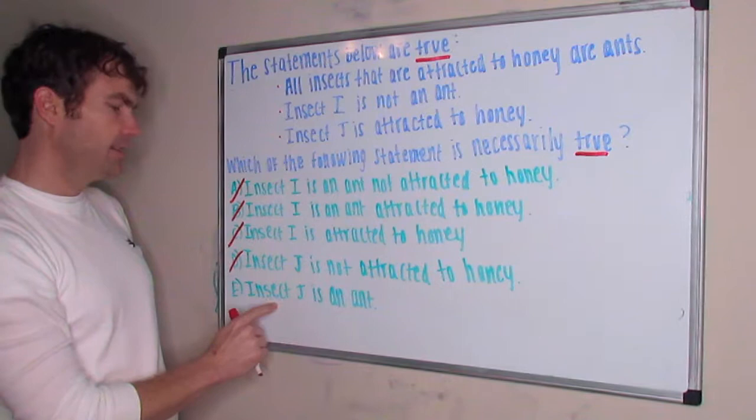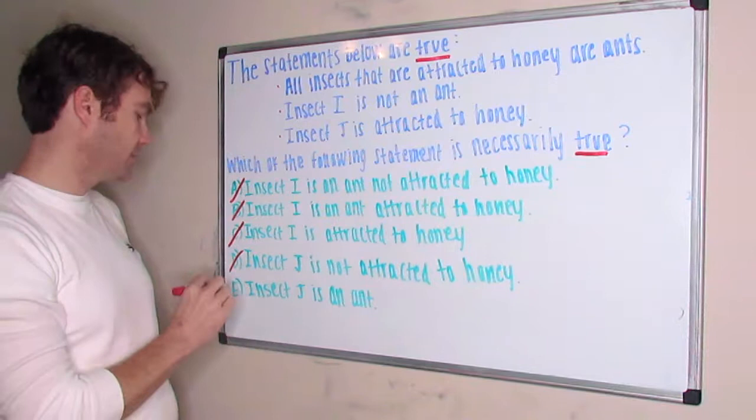And then insect J is an ant—that's the one that I had in my mind that was probably the right answer to begin with, and so that is going to be the right answer here.